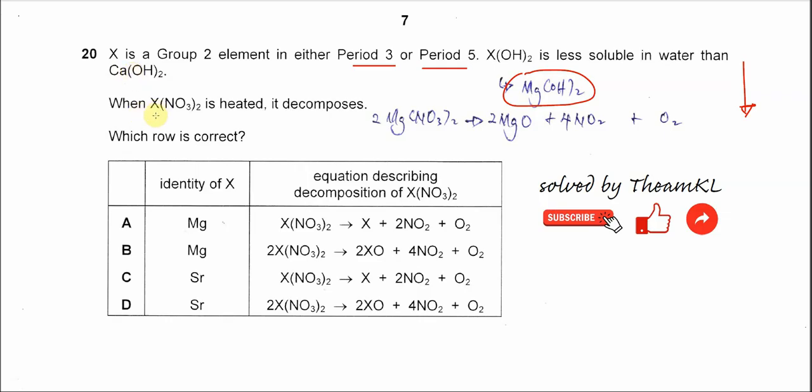When X nitrate is heated, it decomposes. Since we now know X is magnesium, it's magnesium nitrate. So magnesium nitrate decomposes to form magnesium oxide, nitrogen dioxide, and oxygen.